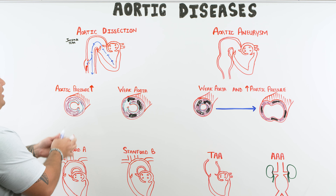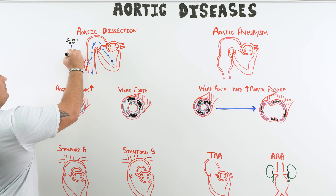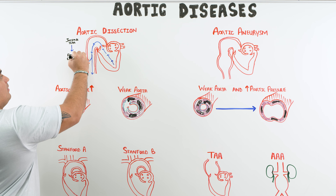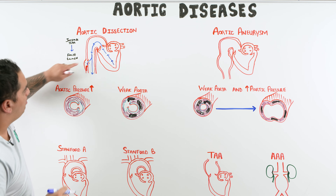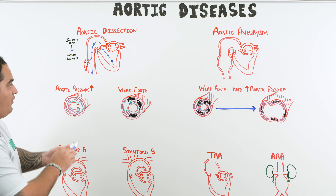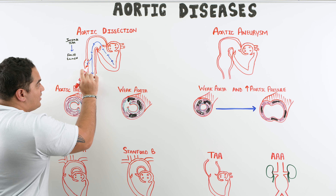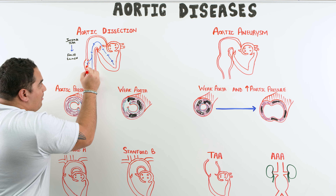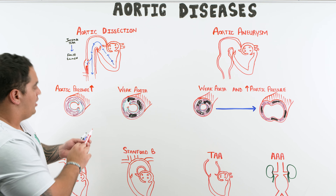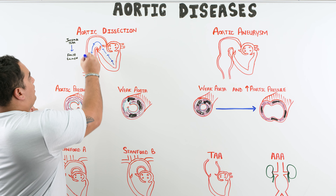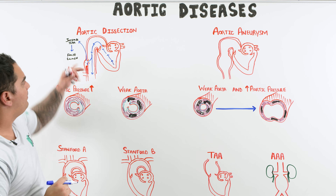So now blood is getting trapped in this false lumen — that's the problematic issue. You have blood moving down the true lumen and blood accumulating in the false lumen. This false lumen can then compress branches off the aorta, cutting off their blood flow, which we'll discuss in detail shortly.